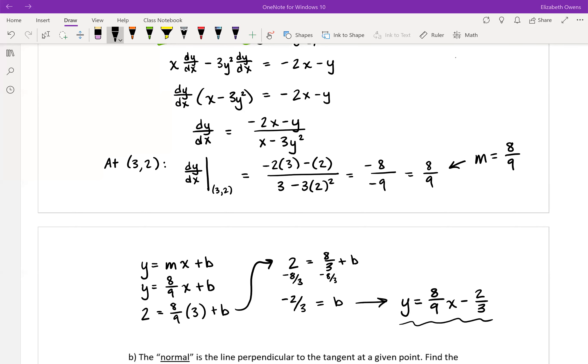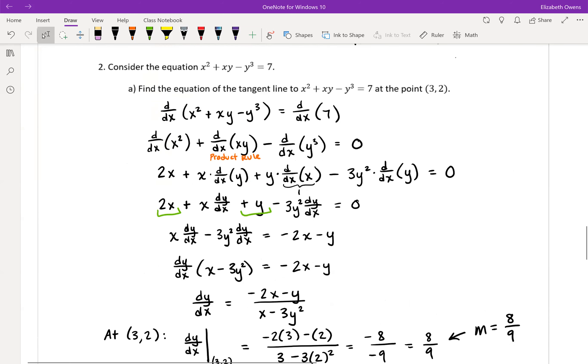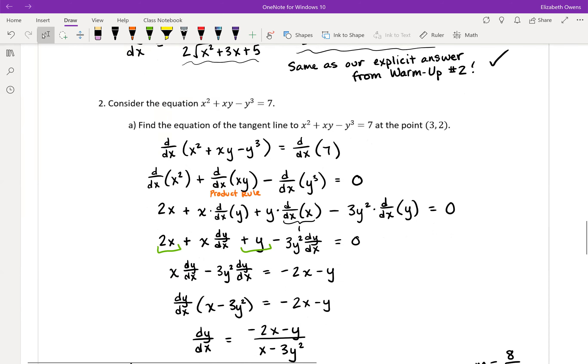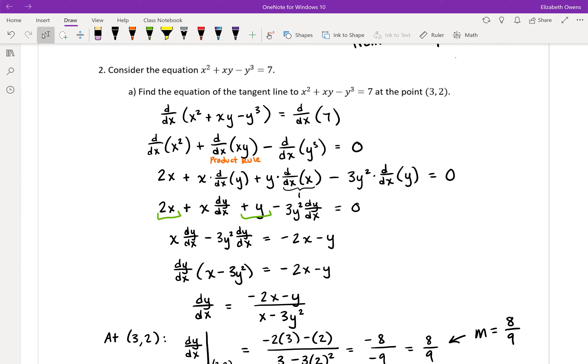This video is a continuation of example number two from section 3.7. We were given this implicit function and we just found the equation of the tangent line to that function at the point (3, 2).